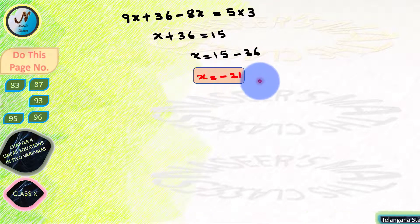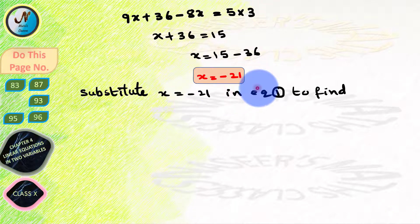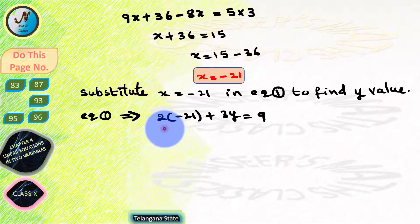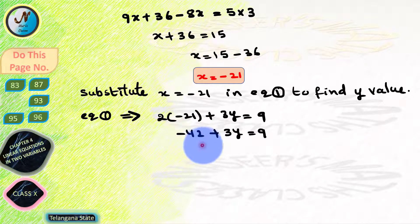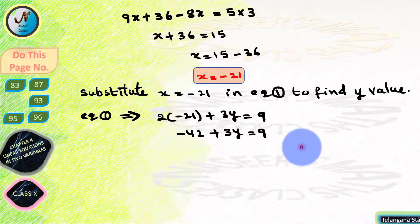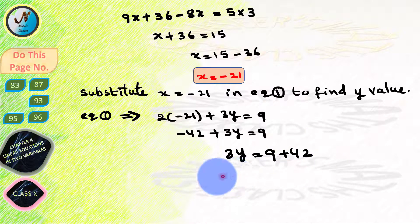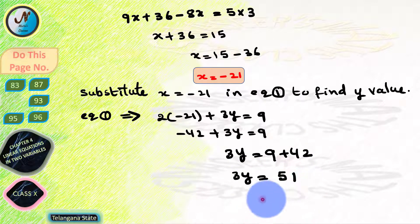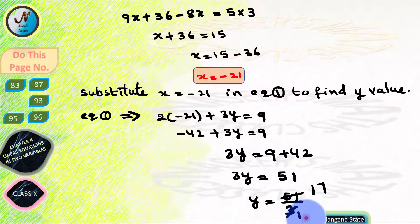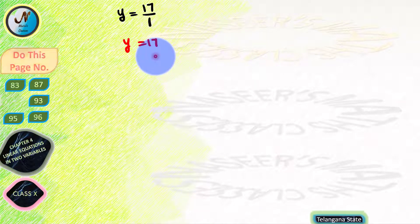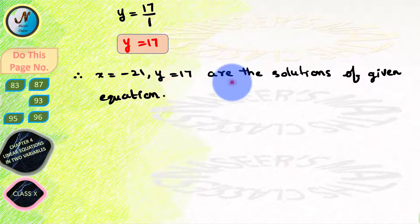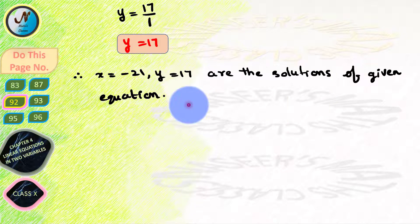Transposing 36 to the RHS: x equals 15 minus 36 equals minus 21. Substituting x equals minus 21 in equation 1 to find y: 2 into (minus 21) plus 3y equals 9, so minus 42 plus 3y equals 9. Transposing minus 42: 3y equals 9 plus 42 equals 51, so y equals 51 by 3 equals 17. Therefore x equals minus 21 and y equals 17 are the solutions of the given pair of equations.